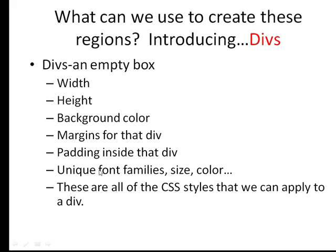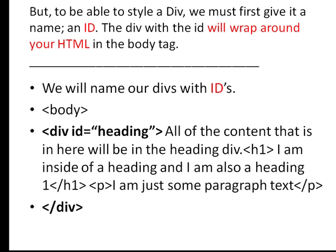If they're all in their different regions, now we can be more specific — because it's not just the heading one, it's the heading one in the region. For example, the heading one in the footer could have a different look than the heading one in my main area. We're going to use CSS to apply all of these attributes and style them.